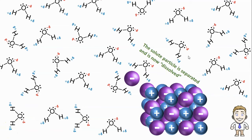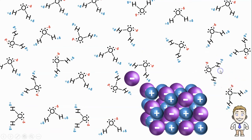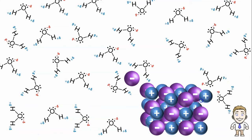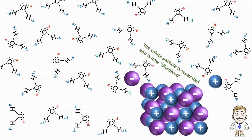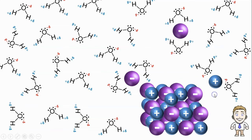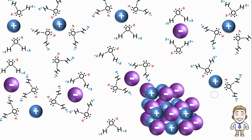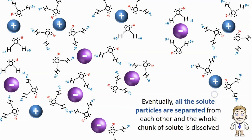This process doesn't happen just once — there are lots of other water molecules also moving around. Other water molecules on the right can move such that their negative oxygen atoms collide with a positive ion, forming an attraction, and when they bounce off again, they pull that positive ion away from the chunk of solute. This positive ion is now dissolved, and this process happens over and over again. The chunk of salt gets smaller and smaller until from our eyes you can no longer see it. It almost looks like it's disappearing, but what's really happening is all those solute particles are being separated from each other and the whole chunk of solute eventually becomes dissolved.